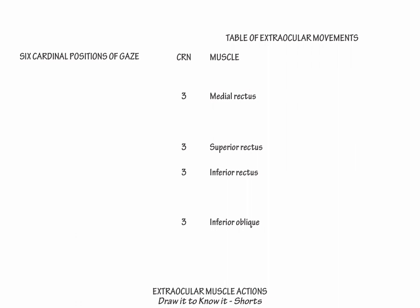Cranial nerve 6 innervates the lateral rectus, and cranial nerve 4 innervates the superior oblique. We will draw the cardinal positions in coronal section, so first label the superior, inferior, lateral, and medial axes, and then identify our perspective as from the left eye.